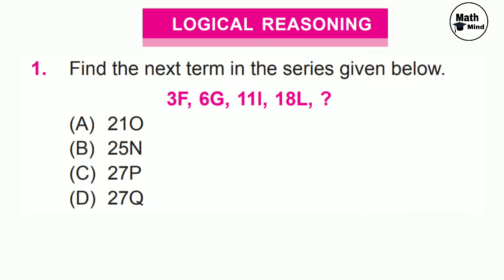Logical reasoning question number 1: find the next term in the series given below — 3F, 6G, 11I, 18L, and dash. To solve this question we have to solve numbers and letters separately. The numbers are 3, 6, 11, 18, and dash.